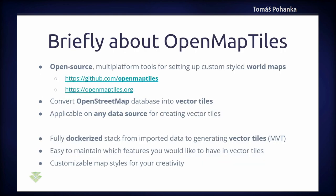OpenMapTiles is an open source multi-platform tool for setting up custom styled world maps. The whole project is on GitHub and has its own web page at OpenMapTiles.org. The main focus of OpenMapTiles is to convert OpenStreetMap database into vector tiles, and you can also convert any of your own data to vector tiles using the project.